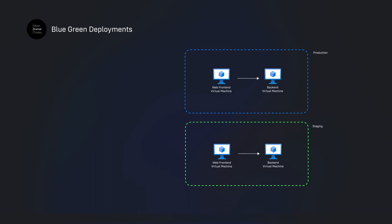Blue-green deployment is a way to introduce new features or versions of your software without breaking your production environment. This is achieved by exposing the new version of your software to a minimal set of users and gradually increasing the user base. If at any point something breaks, you have the control to go back to the old version of your software.